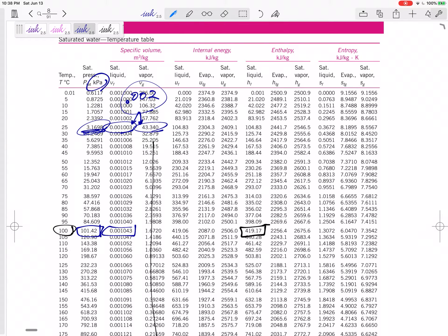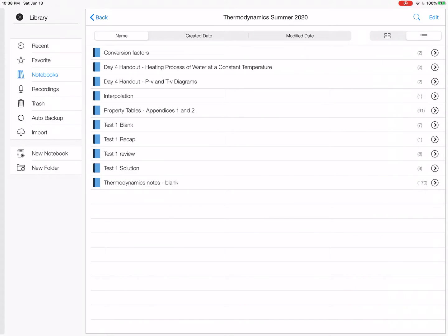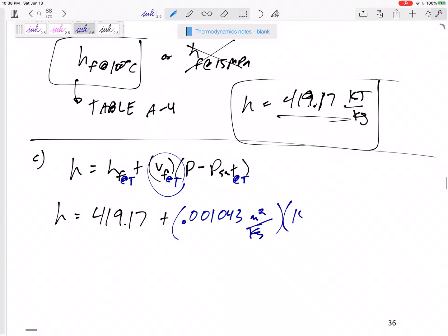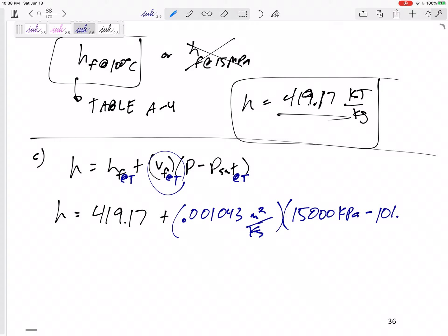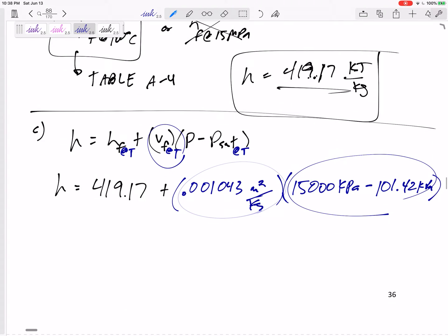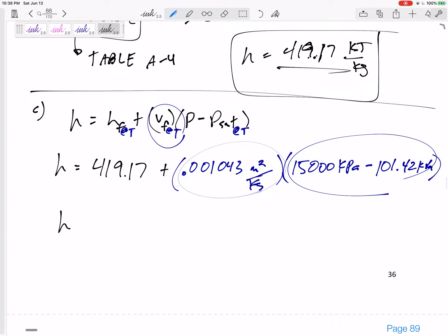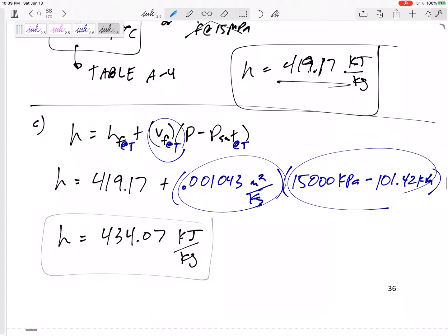We're at 15 MPa. That's a pretty big difference. So this is going to be a pretty big value right here. If I take 15 MPa, let me say 15,000 kPa minus 101.42 kPa. So that's a very large, that's a very small number. When we multiply them together, maybe it does make a little bit of a difference. And it does, I would get 434.07 kilojoules per kilogram.